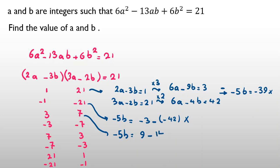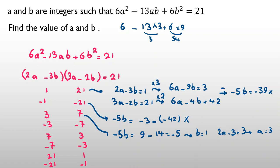So negative 5b equals negative 5 means b equals 1. Substituting into the first equation: 2a minus 3 times 1 equals 3, so a equals 3. Checking: 6 times 9 minus 13 times 3 times 1 plus 6 times 1 equals 54 minus 39 plus 6 equals 21. Correct! So the first answer is a equals 3, b equals 1.